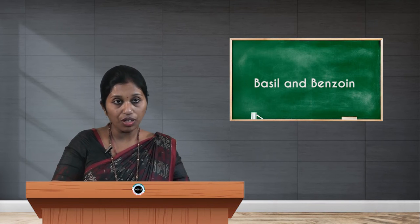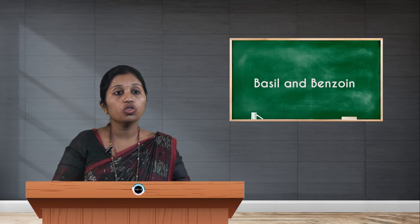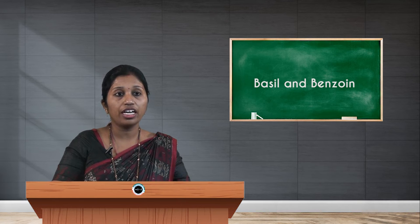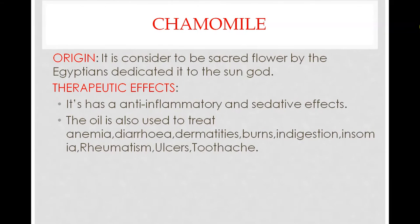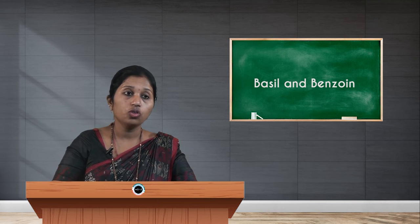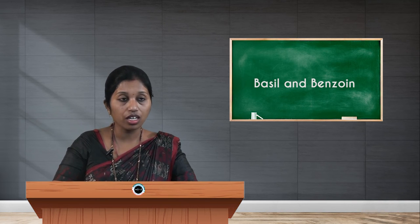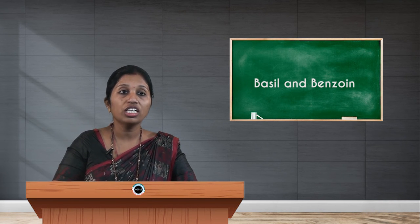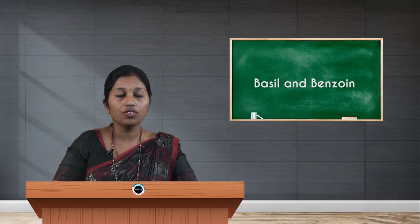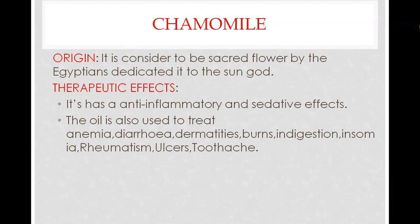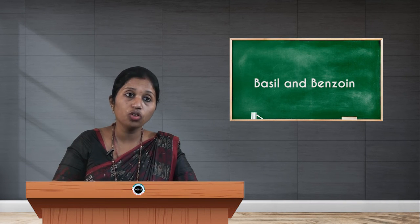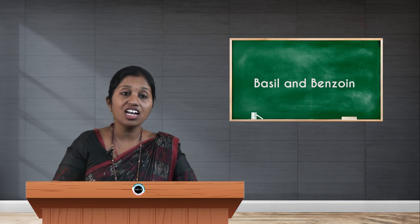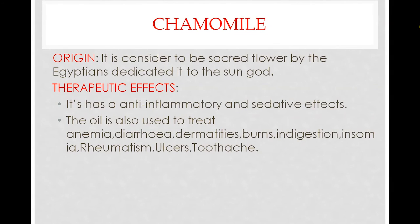The therapeutic effect of chamomile is that it has anti-inflammatory and sedative effects. The oil is used to treat anemia, diarrhea, dermatitis, bone problems, indigestion, insomnia, rheumatism, ulcers, and toothache. It mainly helps for treating anemia — if someone has a low blood count, chamomile oil massage or decoction of the chamomile leaves can help increase hemoglobin content in the body.